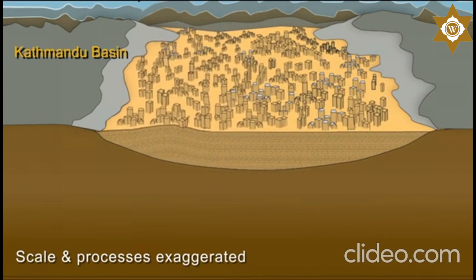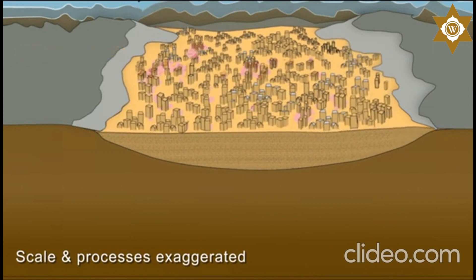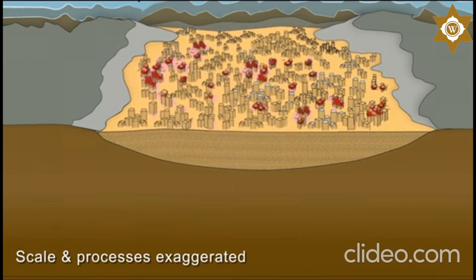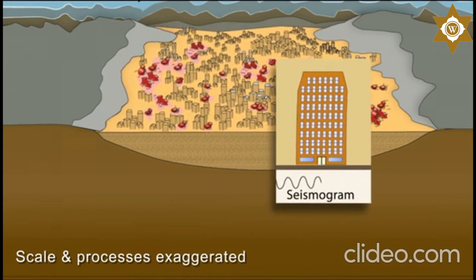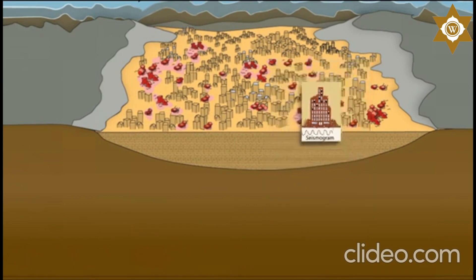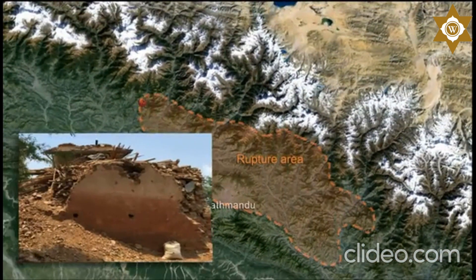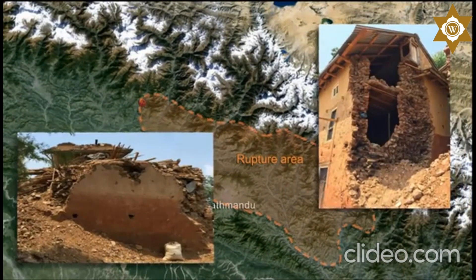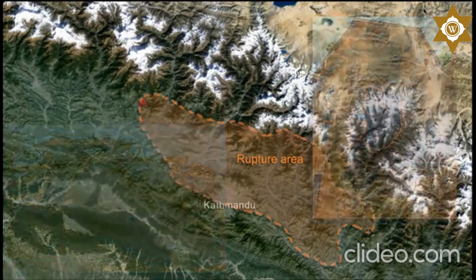The good news is that well-constructed houses of one or two stories withstood this 4-second period ground shaking with minimal damage. The bad news is that tall structures or poorly constructed buildings were vulnerable to the prolonged ground shaking and preferentially collapsed, accounting for many deaths and injuries. Even more deaths and injuries occurred in the rural areas north of Kathmandu, over the center of the rupture zone, primarily due to very weak building construction practices.